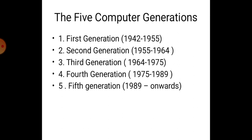The five computer generations are: First Generation (1942–1955), Second Generation (1955–1964), Third Generation (1964–1975), Fourth Generation (1975–1989), and Fifth Generation (1989 onwards till today). Today we shall consider only the first generation and second generation computers. The third, fourth, and fifth generations will be taken up in the next class.